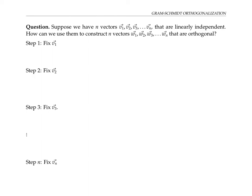This algorithm replaces one vector at a time, building up a bigger and bigger collection of orthogonal vectors. We start with v1 — we don't actually need to fix v1, so we let w1 be exactly the same as v1. Note that w1 is not the zero vector, because we assumed the vectors are linearly independent. If v1 were the zero vector, the set wouldn't be linearly independent, since you can always write zero as a linear combination with all coefficients equal to zero.